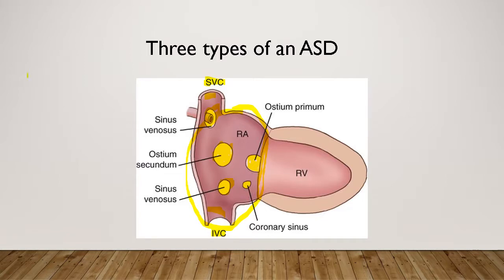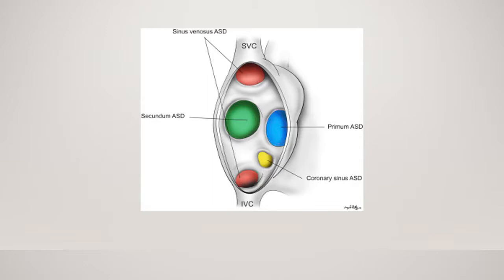Here's another view looking directly into the right atrium. The secundum ASD in the center is the most common one you'll see. The sinus venosus can show up either at the top or at the bottom. The coronary sinus ASD is the most rare. The primum ASD will be associated with AV canal a good portion of the time.